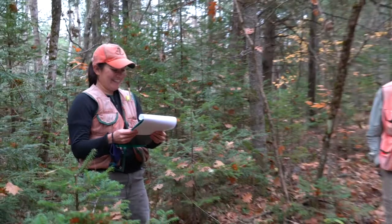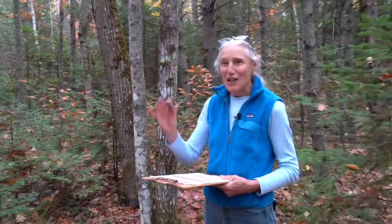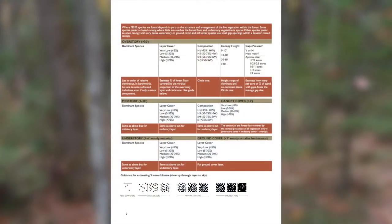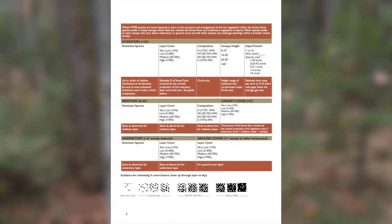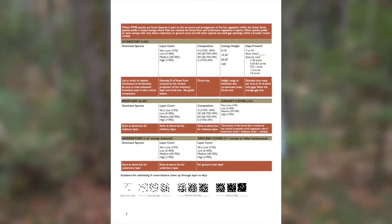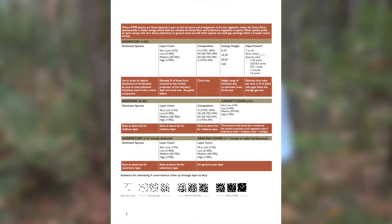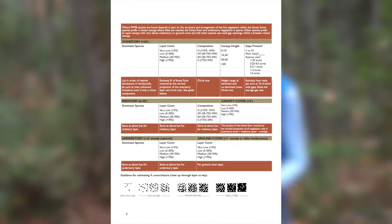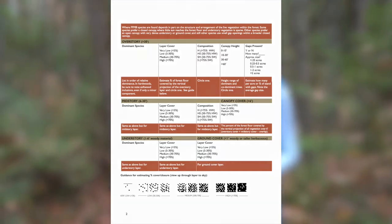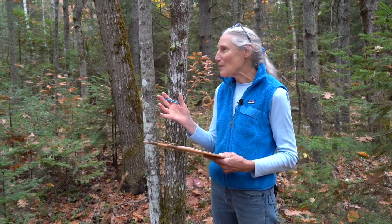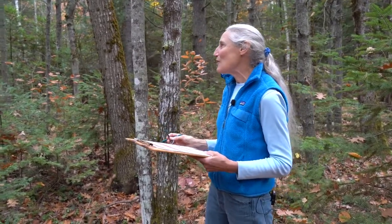On the second page of the form, we'll look at the overstory — everything over 30 feet high — the midstory between 6 and 30 feet high, the understory from 1 to 6 feet high, and the ground cover under 1 foot. We're strictly looking at woody vegetation. We'll start with the overstory and look at what the dominant species are.